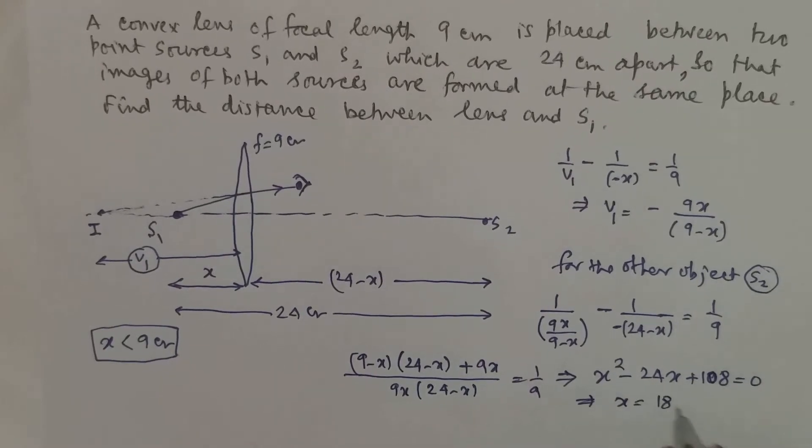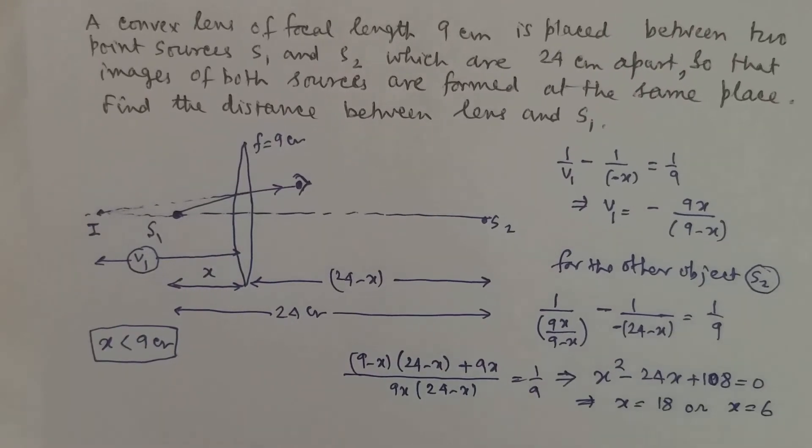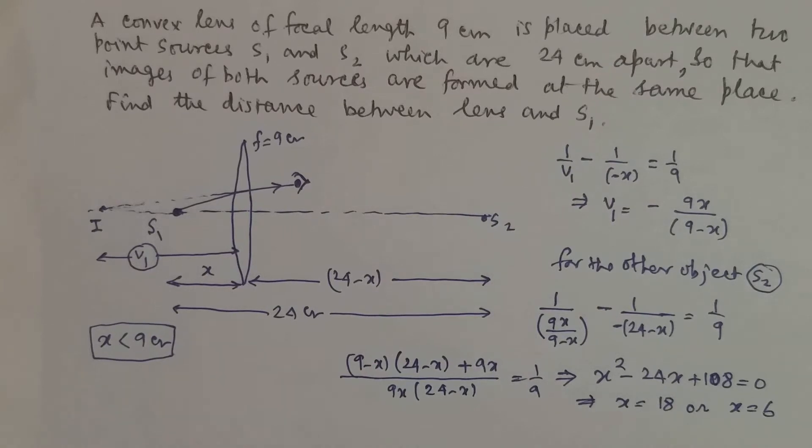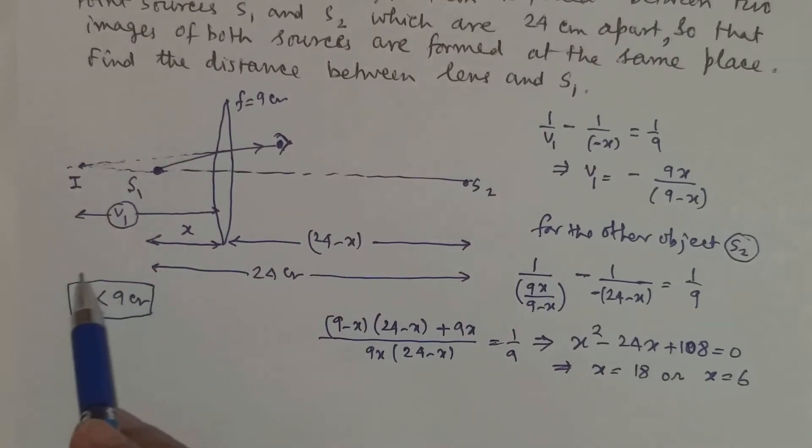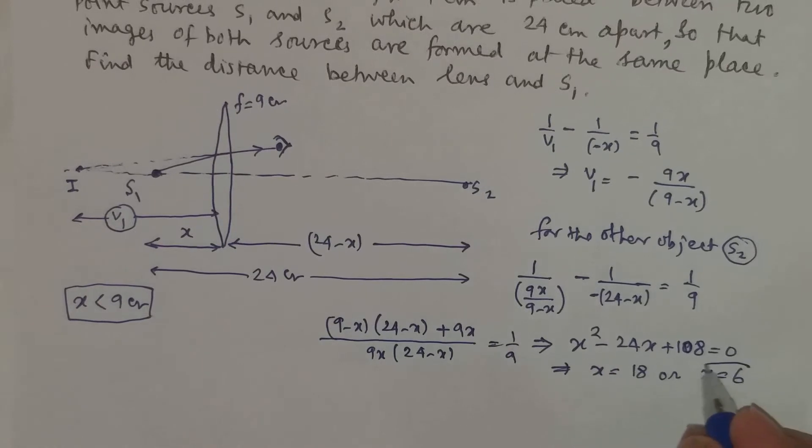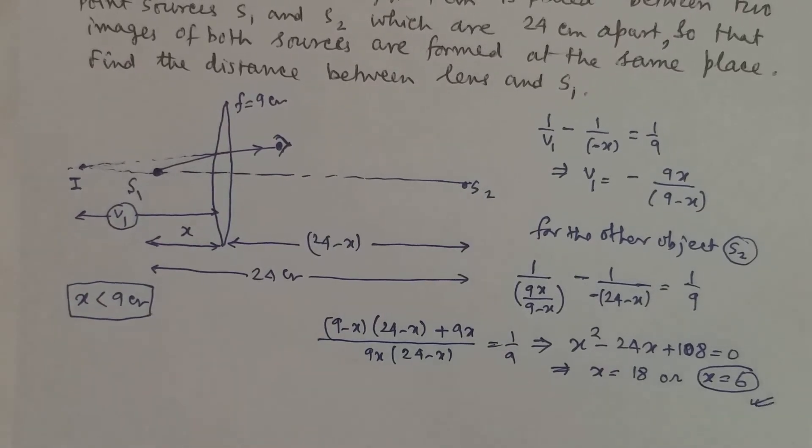And it will give you x equal to 18 or x equal to 6. Now from the beginning I have assumed that x should be less than 9 cm, so therefore x equal to 6 is accepted.